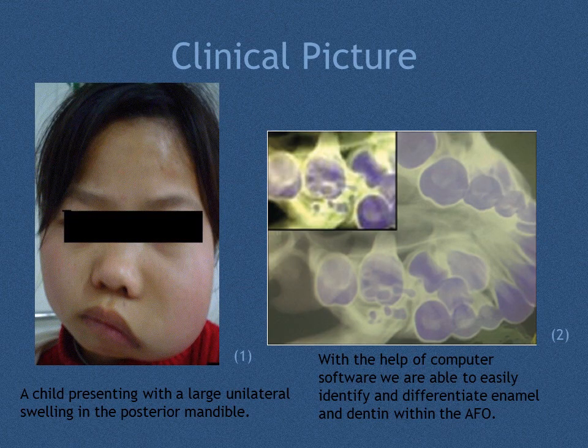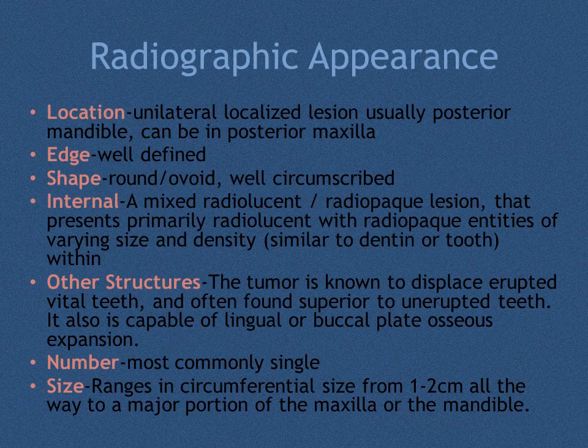The picture on the left is a child presenting with a large unilateral swelling in the posterior mandible. The picture on the right is found with the help of computer software, where we are able to easily identify and differentiate enamel and dentin within the ameloblastic fibroodontoma.